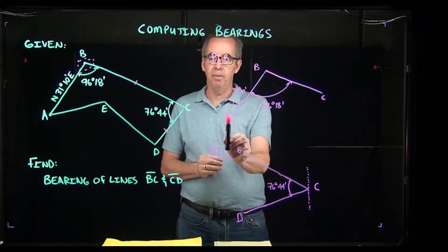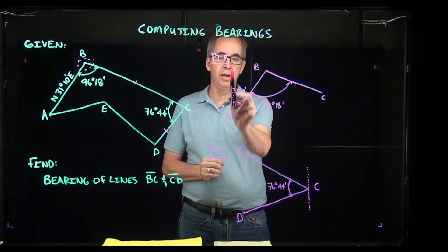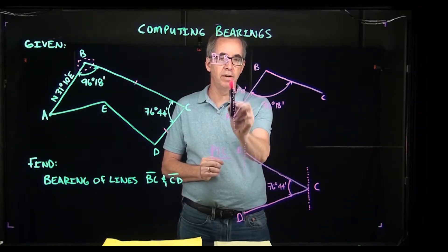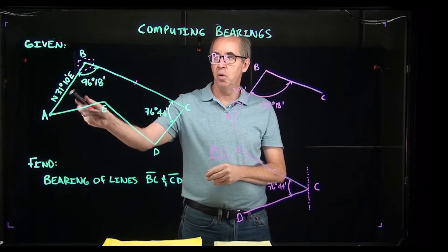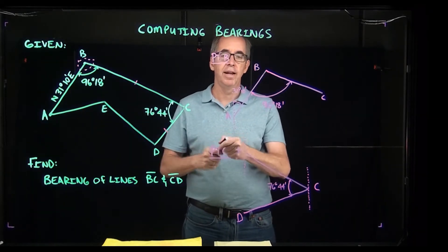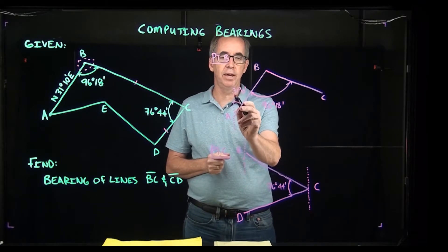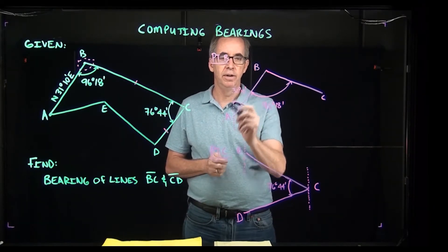What I'm doing first of all is at point A you can see I draw in my meridian, my vertical reference. If I was given a bearing of north 31 degrees 10 minutes east, I'd say basically that this angle here is the 31 degrees 10 minutes.